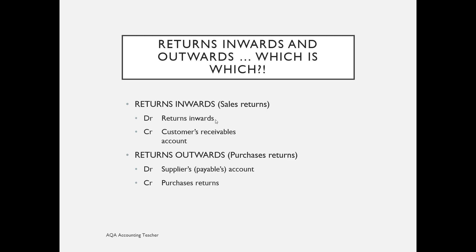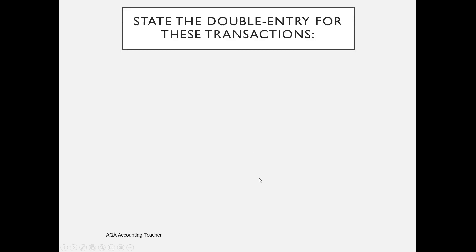For returns outwards — purchase returns — these are goods sent back to suppliers because we ordered them by mistake or they're faulty. We debit the supplier's account, the trade payable, to reduce the amount we owe them, and credit a separate purchase returns account. We don't want to credit the purchases account; purchases should only ever have transactions on the debit side. We need a separate purchase returns account.